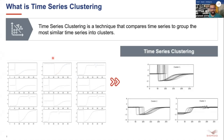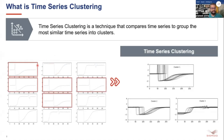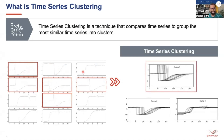If you look closely at these time series trends, you can see similar-looking trends. These trends should be clustered into cluster one, and likewise other similar trends should be clustered into cluster two and cluster three.